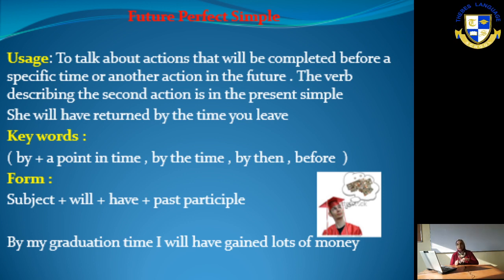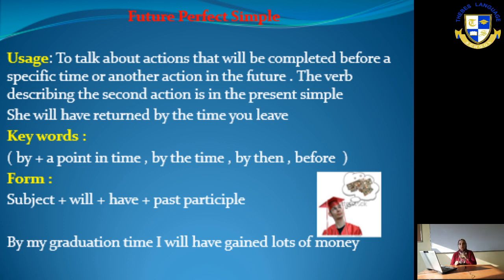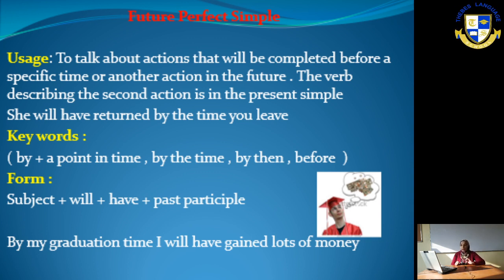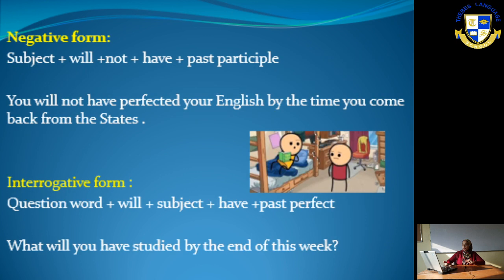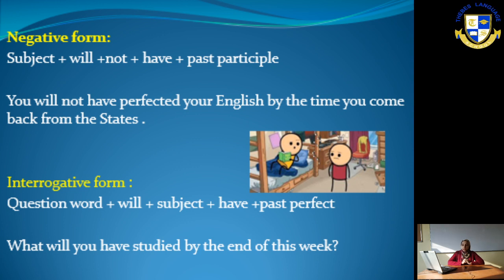For example: 'By my graduation time, I will have gained lots of money.' You are working before your graduation time, and by the time you reach graduation, you will have gained lots of money — meaning this action is completed before that specific point.